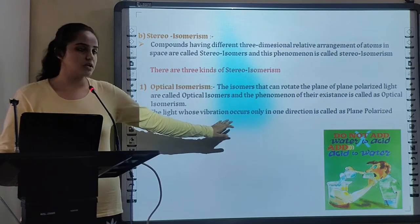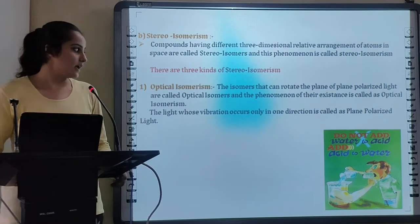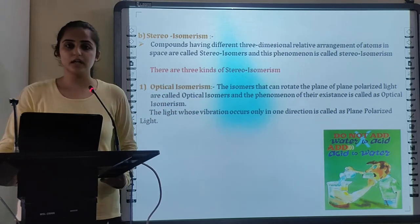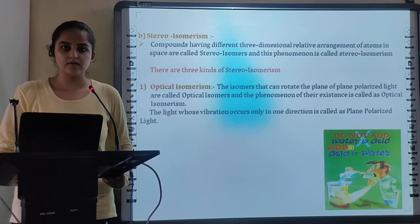The light whose vibration occurs only in one direction is called Plane Polarized Light. So the isomers that rotate plane of plane polarized light are called as Optical Isomers and the phenomenon of their existence is known as Optical Isomerism.